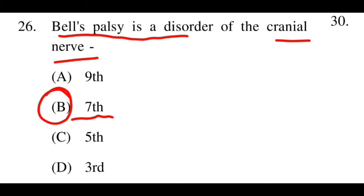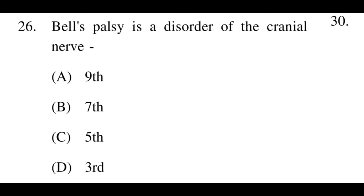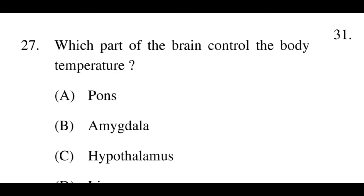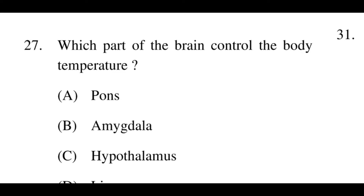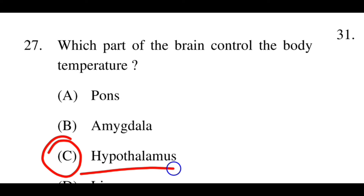Next question: Which part of the brain controls the body temperature? Options: A: pons, B: medulla oblongata, C: hypothalamus, D: liver. The right answer is C, hypothalamus. The hypothalamus is the brain part that controls body temperature.